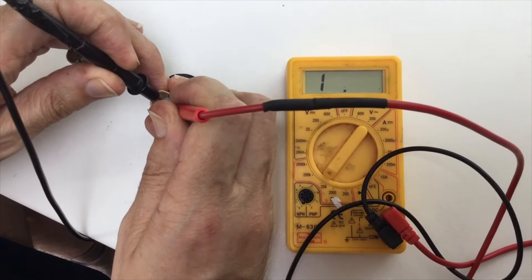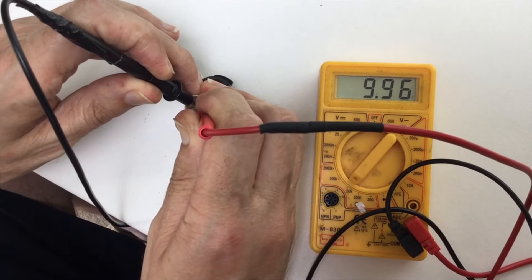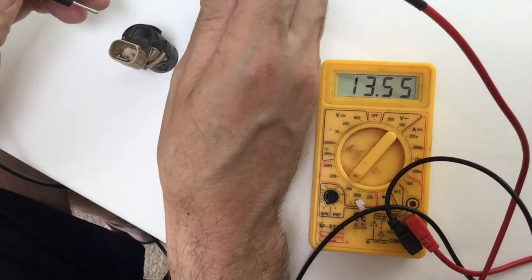And with the setting on 20K, we now get a very clear resistance level showing 9.9 on that scale.